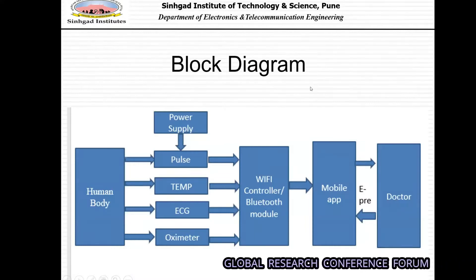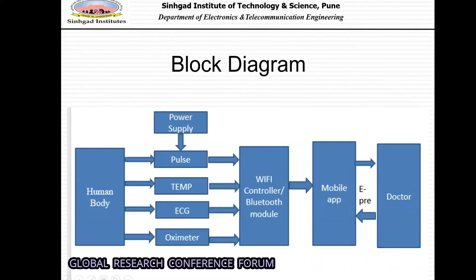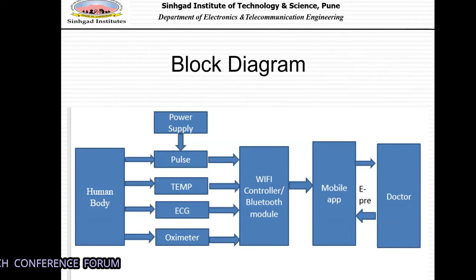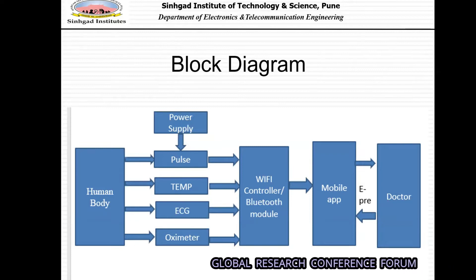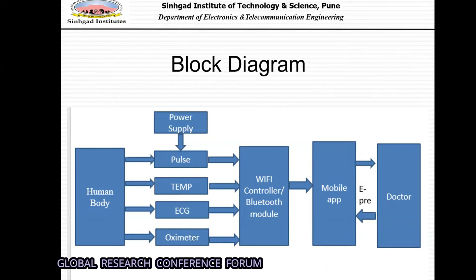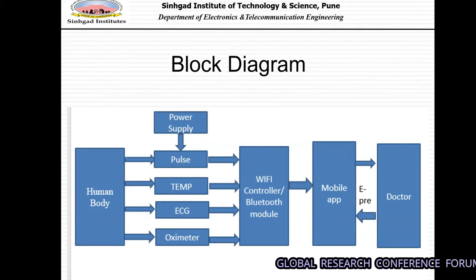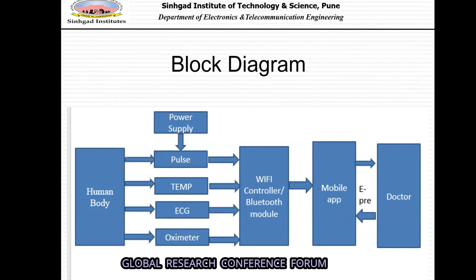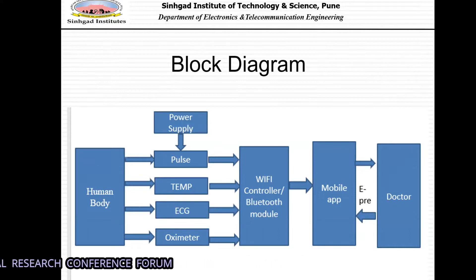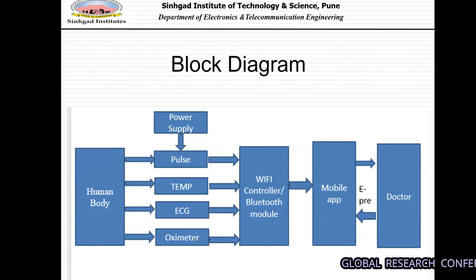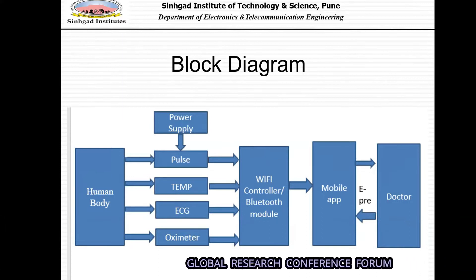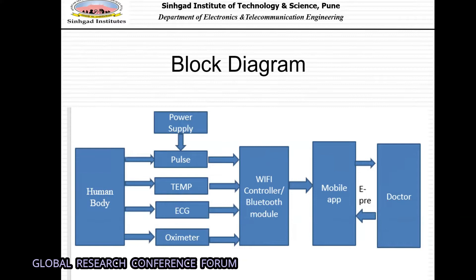This is the basic diagram of how our project is going to work. The human body sensors detect pulse, temperature, and oxygen saturation through a particular power supply. The data is then sent to a WiFi controller or Bluetooth module, through a mobile app, and a prescription is taken out from a doctor.